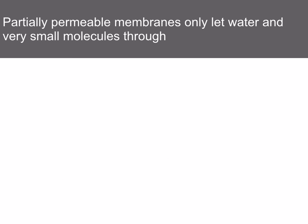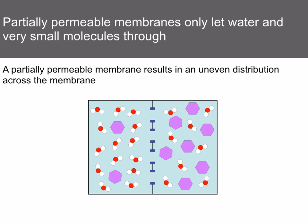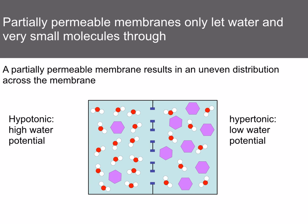A partially permeable membrane only lets water and very small molecules through — in this case, it won't let the glucose molecules through, resulting in an uneven distribution across the membrane. If you've got two solutions with a partially permeable membrane in between, the side with fewer glucose molecules is hypotonic, with a high water potential. The side with more glucose is hypertonic, with a low water potential. So water moves from left to right, from the hypotonic to the hypertonic solution.